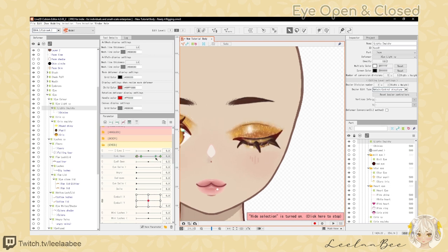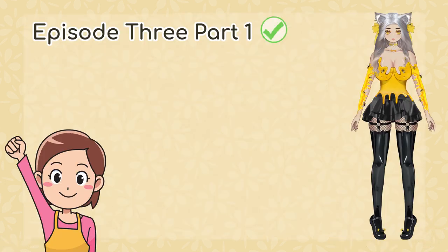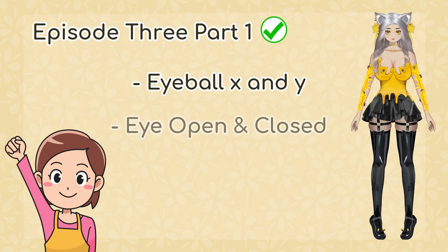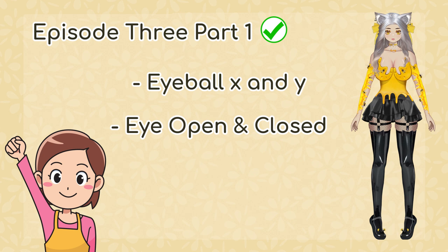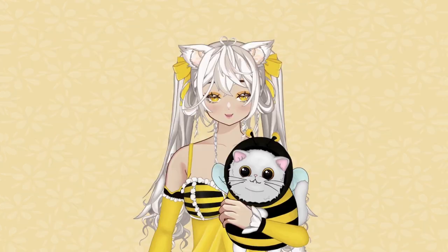So now that we have worked on the parameters, we can start working on the eye physics. That concludes this video — we have completed eyeball X and Y rigging as well as the eye open and closed. Our next video will focus on eye physics. I hope this video was helpful for getting a grasp of Live 2D Cubism. Thank you so much for your support. If you have any questions, feel free to comment them down below. Get some coffee or some sleep, and enjoy the rest of your day or night — peace.